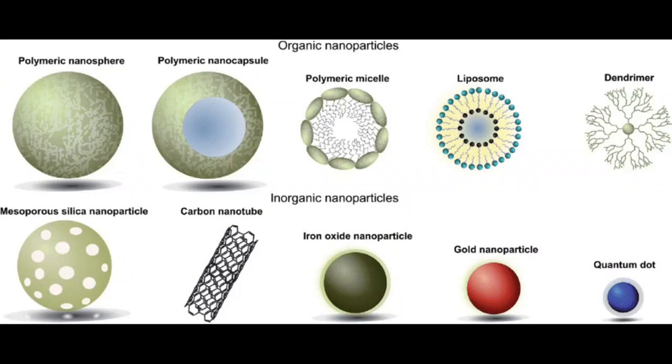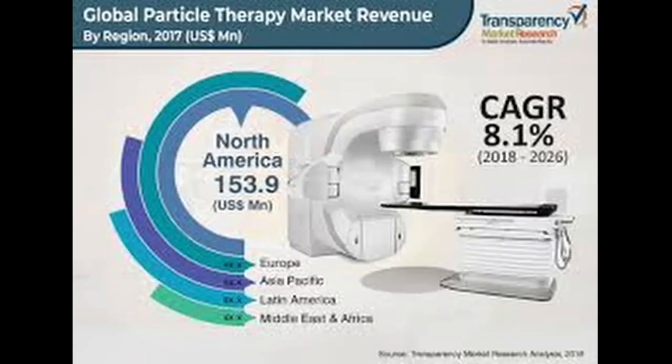Nanotechnology is at the scale of 10 to the power of minus 9. If we design a particle at 10 to the power of minus 9, this is a nanotechnology particle — a very important biological technique. Even for cancer treatment, this is a nanotechnological particle therapy.